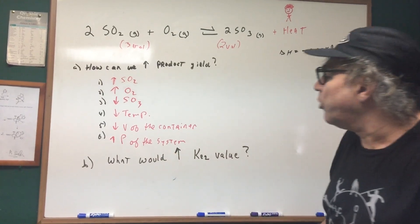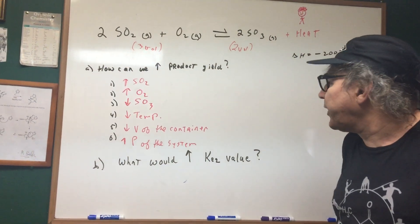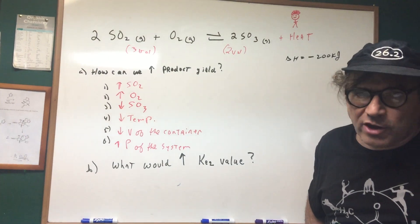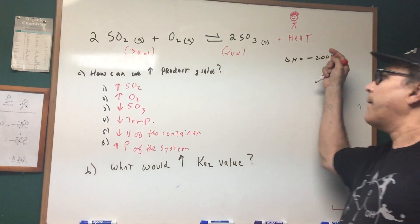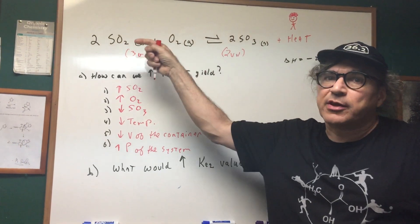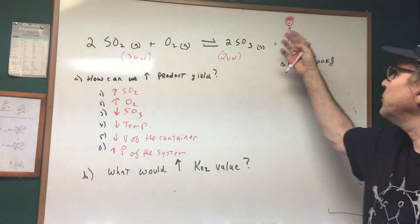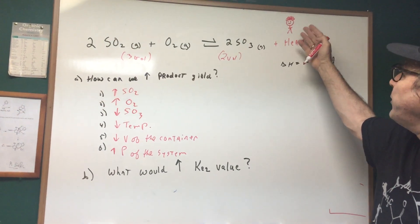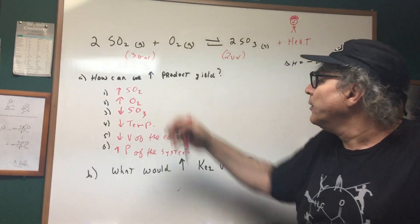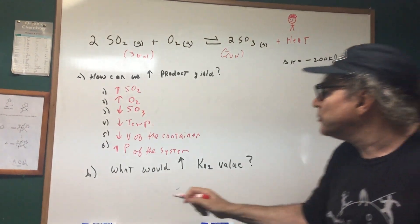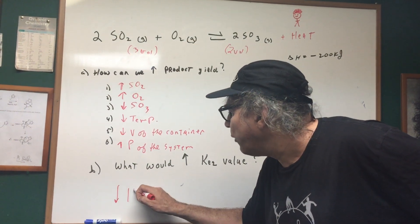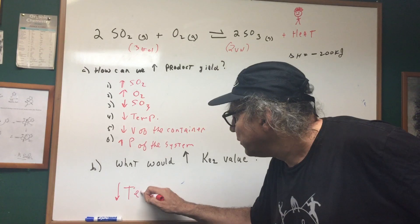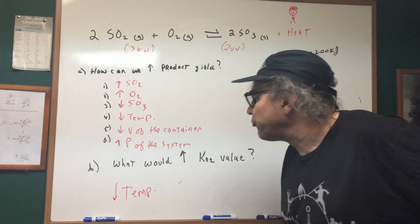Part B, which is a sure-bet DAT question. What would increase the value of the KEQ? The only thing that changes the value of the KEQ is temperature. Now if we increase the temperature, the equilibrium shifts to the left because remember the little trick I said to use is you heat it up and the little man runs away. Well I don't want it to go to the left. So what would I do to increase the value of the KEQ? I would decrease the temperature of the system.